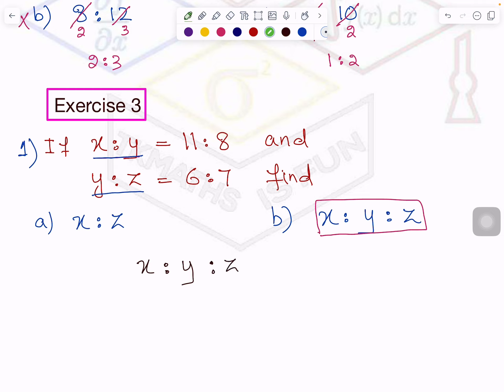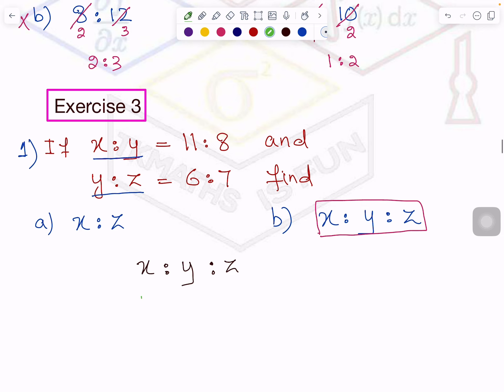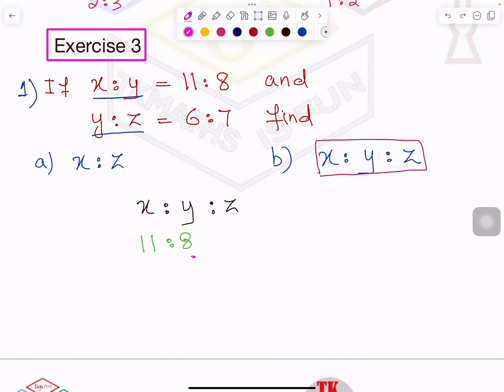So I will see that y is common in both. So how will I write it to solve this question? x is to y is to z. Because y is common. Then what will I write here? First of all, x is to y is 11 is to 8. This is I am picking up from here.